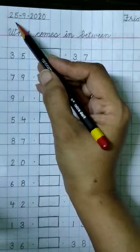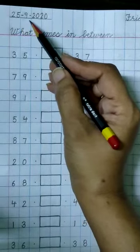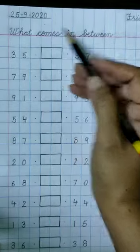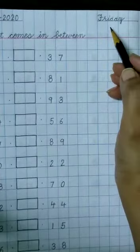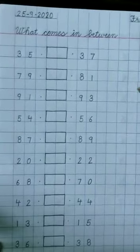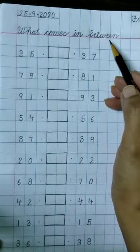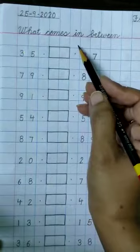So first write the date here, 25-9-2020, 25th September, and the day is Friday. Then write what comes in between on the top. Leave above boxes.